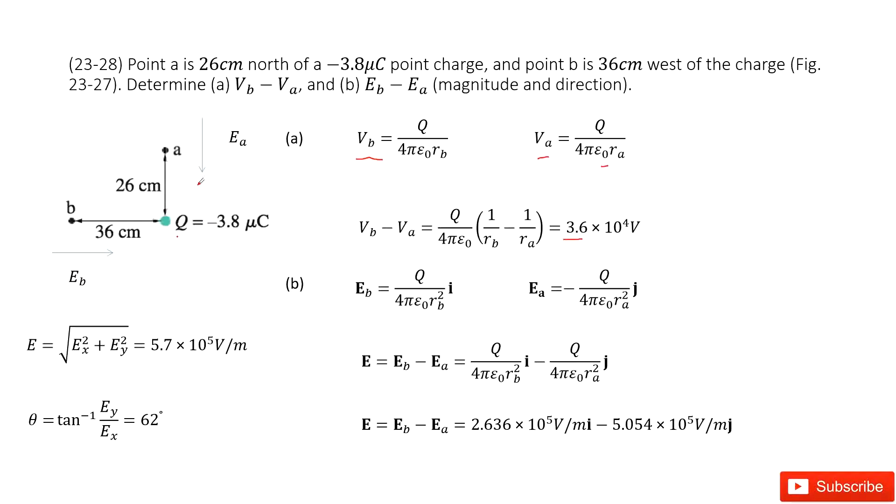EA points vertically down and EB points horizontally to the right. We can write EB and EA in this function. This is the dual function for point charge. As we see, EA is just a negative J component, and EB is just the I component.